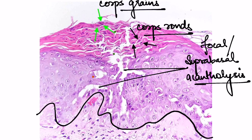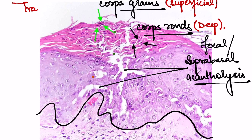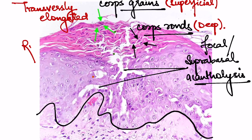Corps ronds are round, large acantholytic keratinocytes predominantly located in the stratum spinosum and stratum granulosum, which are marked by these black arrows. While corps grains are elongated small acantholytic cells mostly located in the stratum corneum, marked by these green arrows.